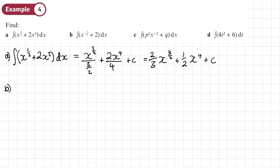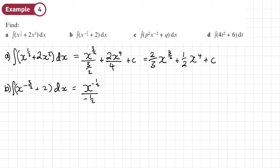Moving on to part B: we're integrating x to the power minus three over two plus two, DX, with respect to X. Starting with the first term, we add one to the power — so that's going to be negative a half divided by that new power, negative a half. Remember, constants become a constant with the X, then plus C. Tidying up: dividing by negative a half is the same as multiplying by negative two, so that's minus two x to the power negative half plus two x plus C.